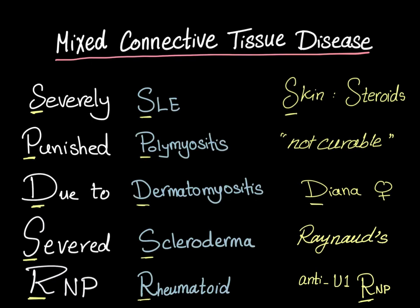What is 'severed RNP'? This disease has an anti-U1 RNP antibody, so the RNP is severed — meaning the antibody is attacking it. That's the key point.